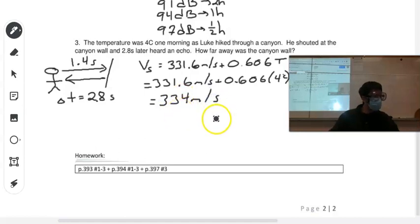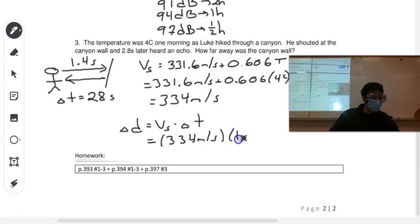Now if you want to know how far away it is, we'll calculate distance equals velocity times time. And we'll use the time it took to actually get to the canyon. So that's half the time it took to hear the echo. So we have 334 meters per second times 1.4 seconds, which gives us about 468 meters.